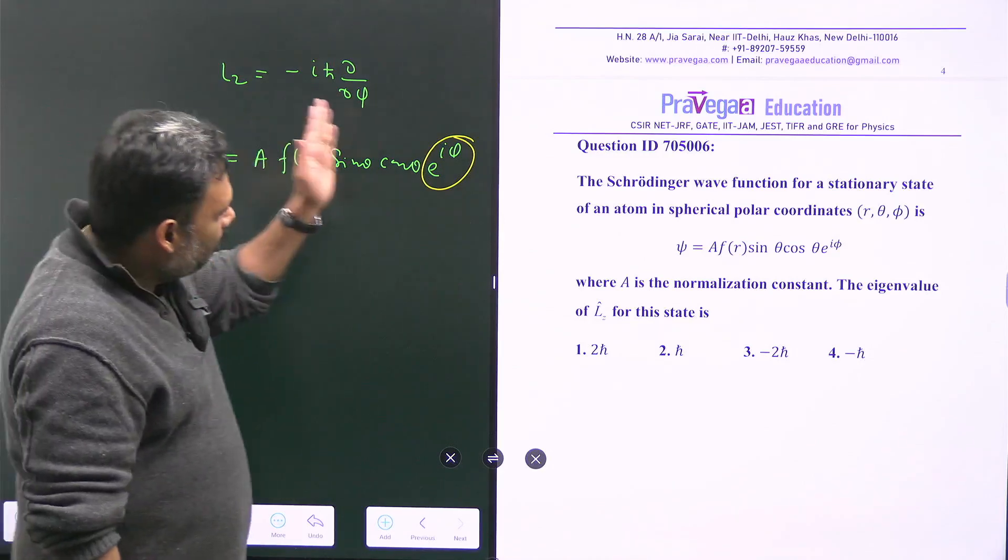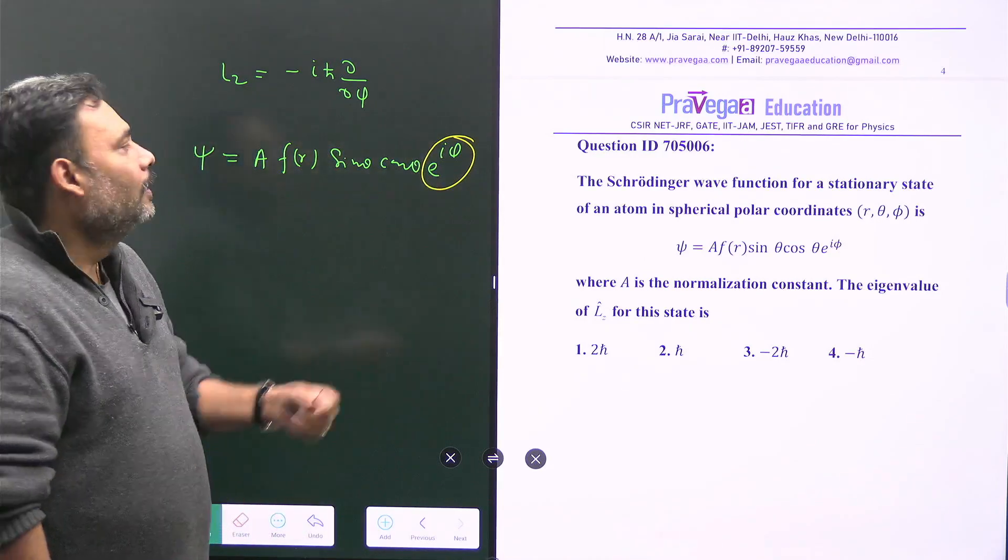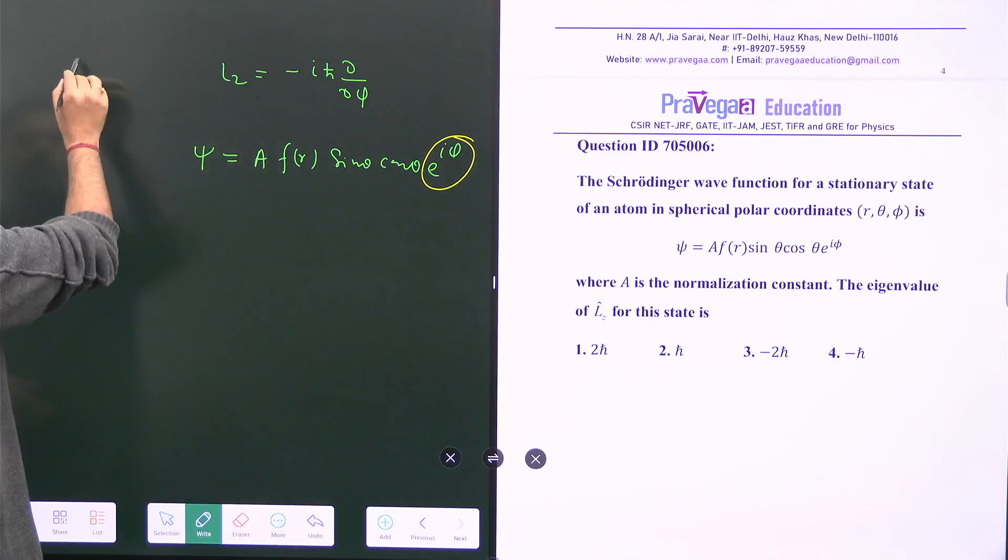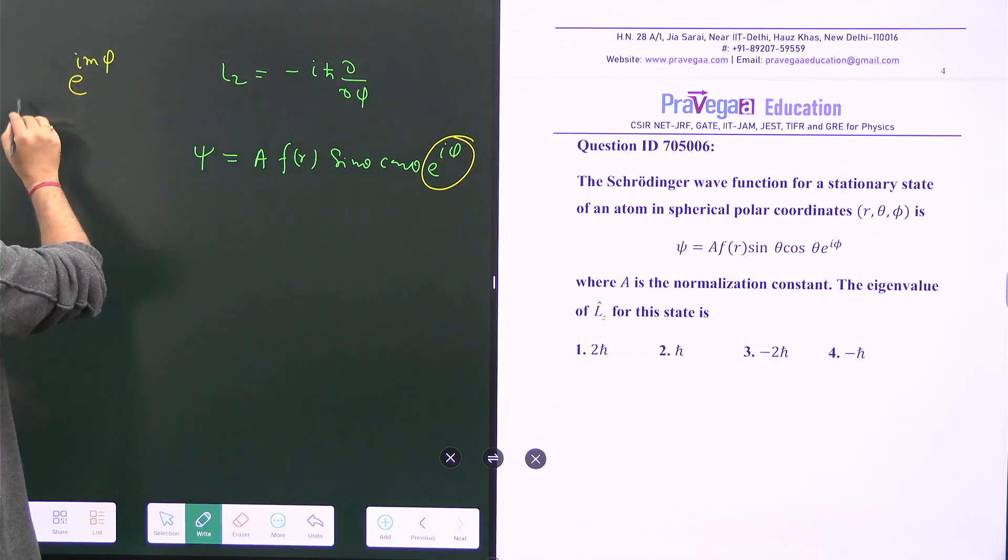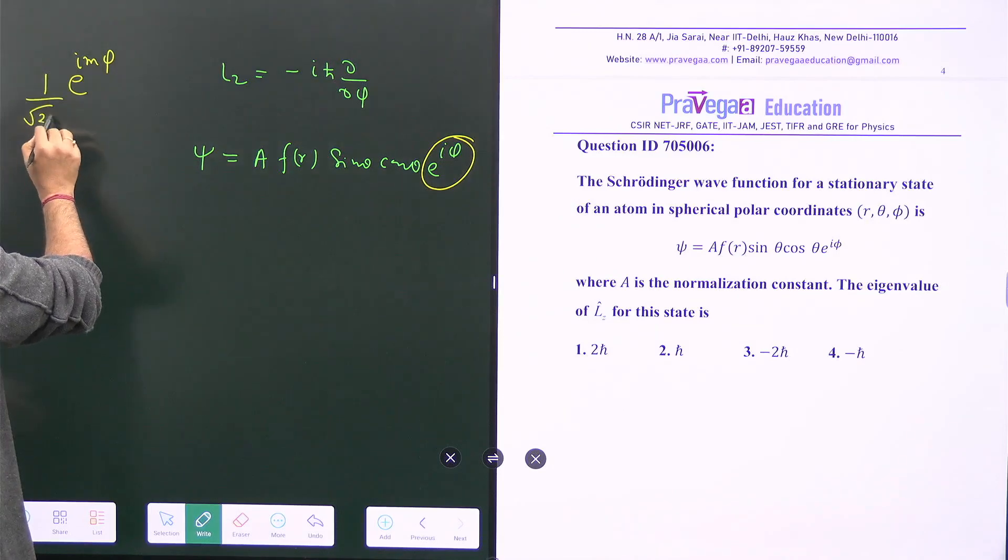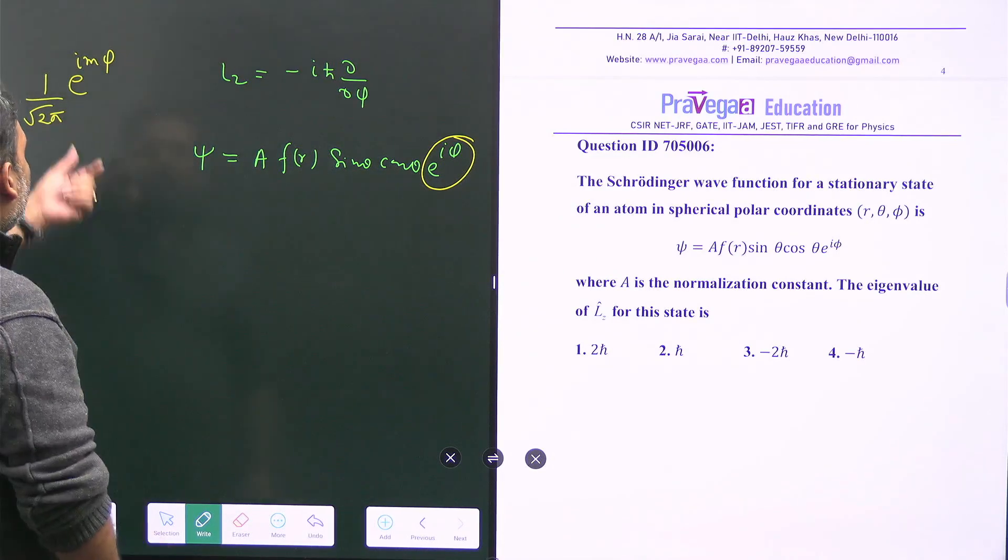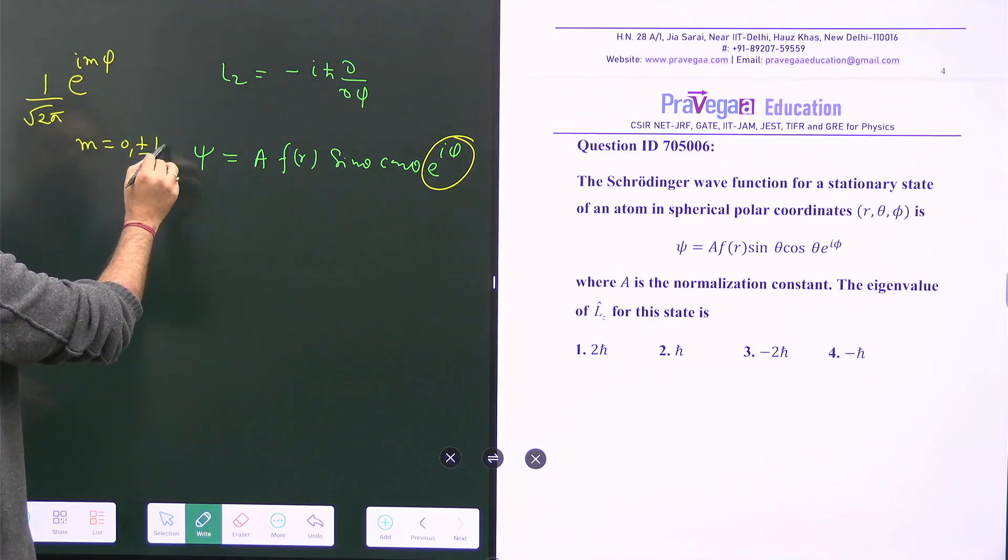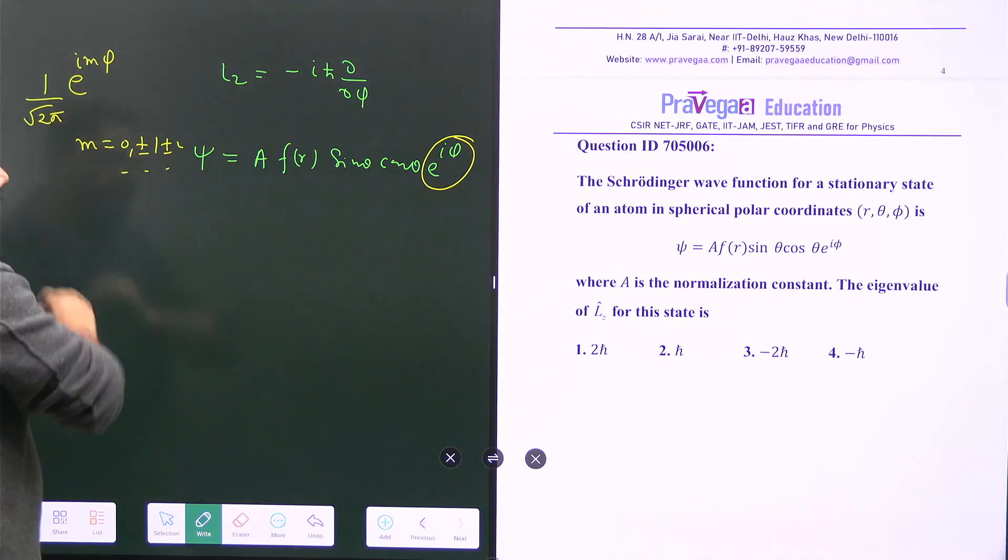When you see the term e^(iφ), the eigenstate of Lz is e^(imφ), and you can take 1/√(2π) as a normalization constant, where m can be 0, ±1, ±2, and so on.